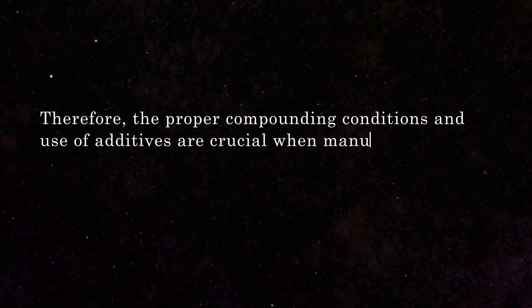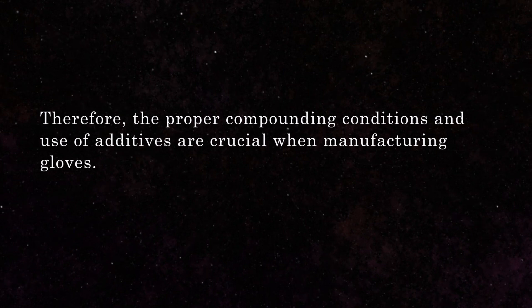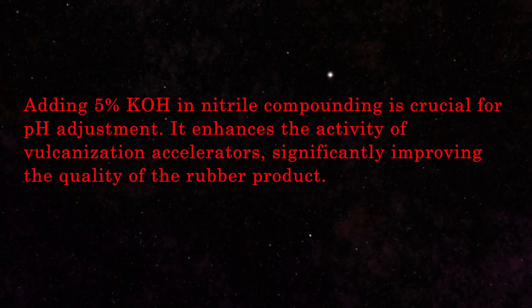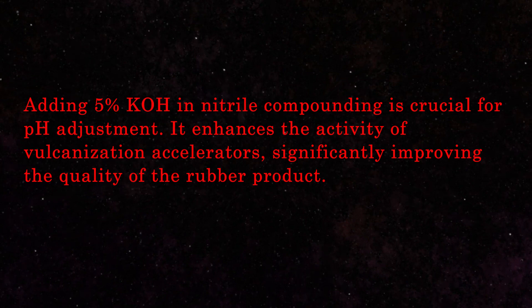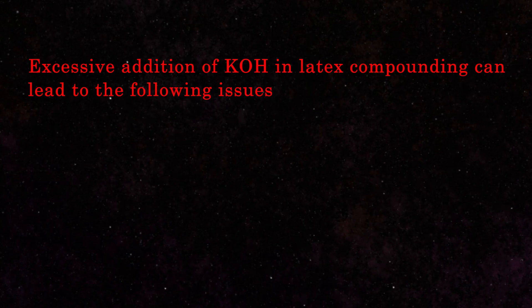Therefore, the proper compounding conditions and use of additives are crucial when manufacturing gloves. Adding 5% KOH in natural rubber compounding is crucial for pH adjustment. It enhances the activity of vulcanization accelerators, significantly improving the quality of the rubber product. Excessive addition of KOH in latex compounding can lead to the following issues.